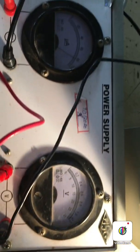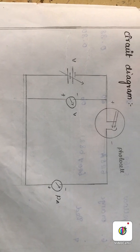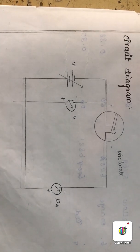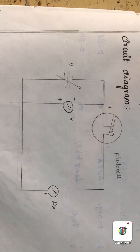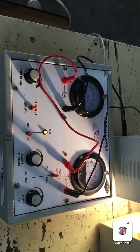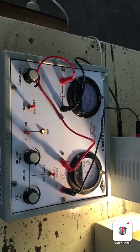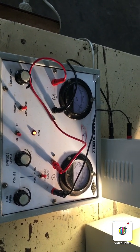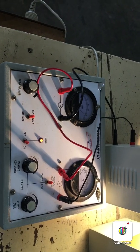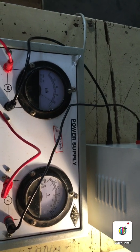The other components required are a microammeter, and there is a voltmeter. This is how the photocell can be connected with the power supply, voltmeter, and microammeter. You can wire up the photocell with the microammeter and the voltmeter as you are seeing in this picture. Now let us see how the photocell responds to the light.